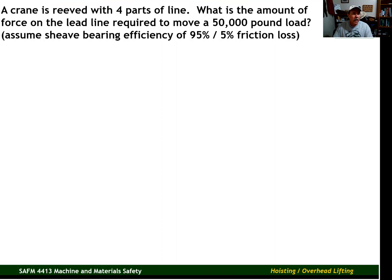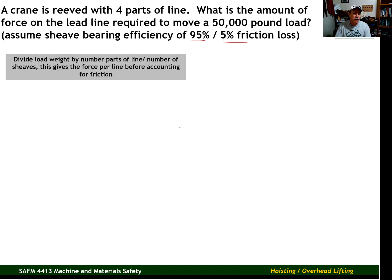Let's do another example problem. We have a crane reeved with four parts of line. What is the amount of force on the lead line required to move a 50,000-pound load? Assume a sheave bearing efficiency of 95%, which gives us a 5% friction loss. The lead line is the line that the pulling force of the hoist is exerted upon — or if it were a manually-powered block and tackle, the lead line would be the line pulled by the worker. The efficiency is a little different than the previous problem, but the method is exactly the same. We divide the load weight by the number of parts of line to get the force per line before accounting for friction.